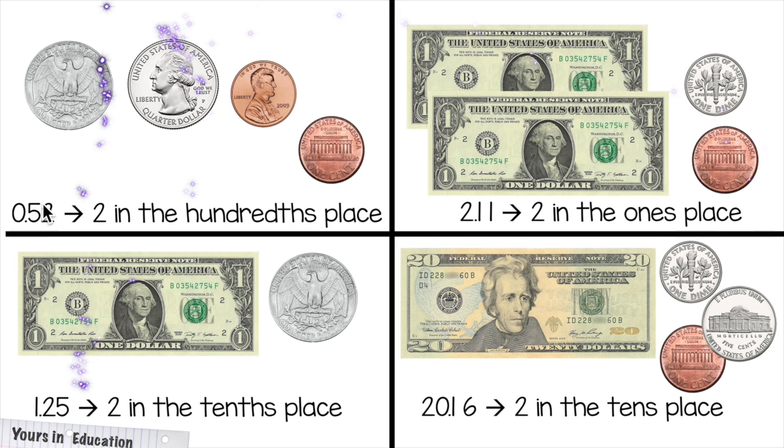Let's recap. Hundredths place, tenths place, ones place, and tens place. Tens, this is how you write tens in whole number, and this is how you write tenths in decimal. It has T-H.